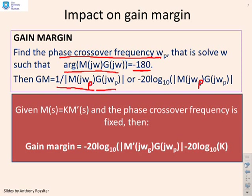Now, what we've done, you'll remember, is we've said, let's assume that m of s can be given as K times m dash of s. And so if I now substitute this into the formula we've got for the gain margin, then this is what you get.